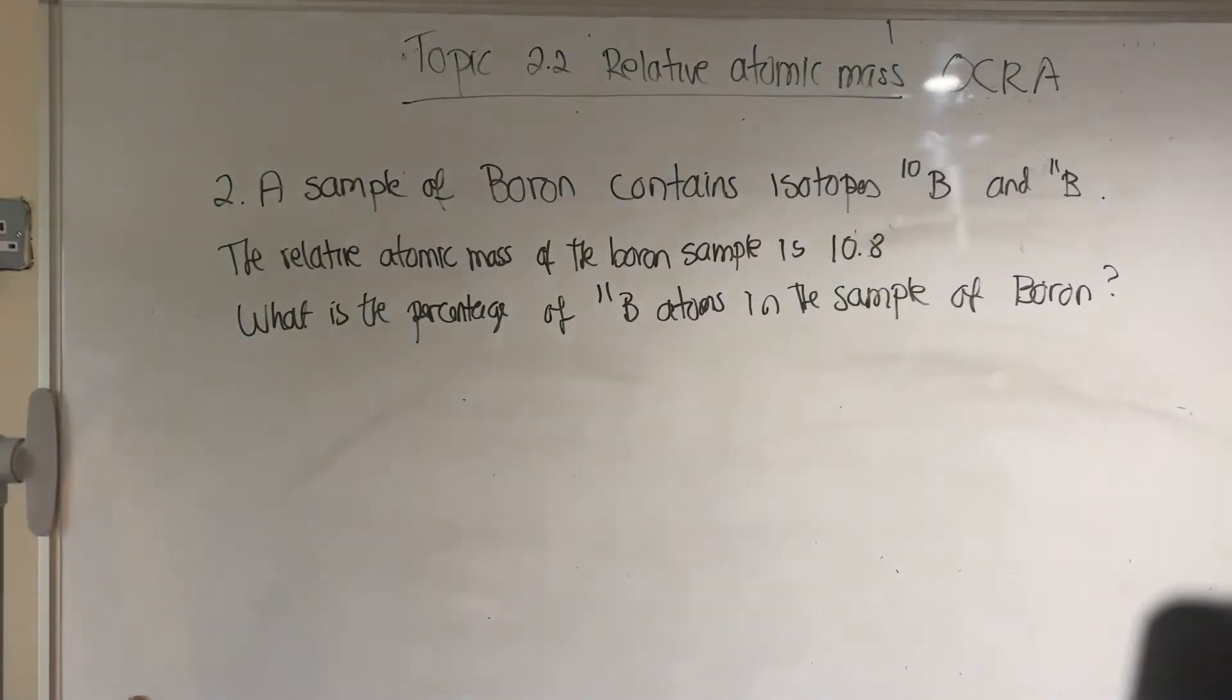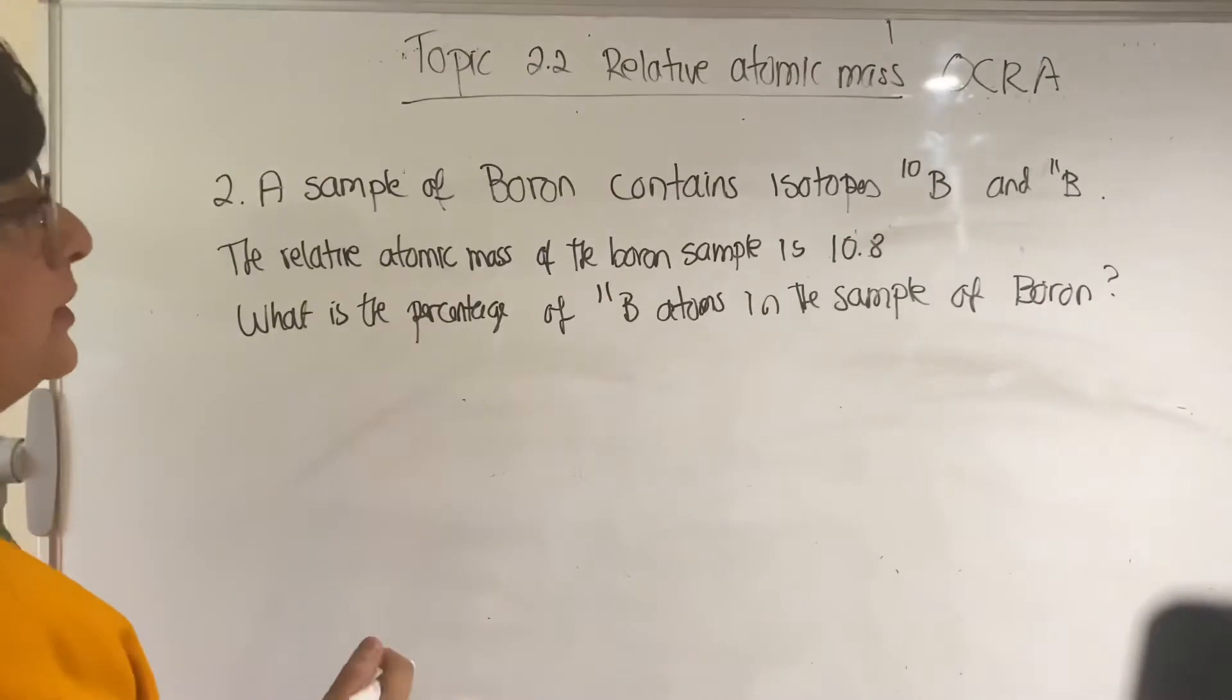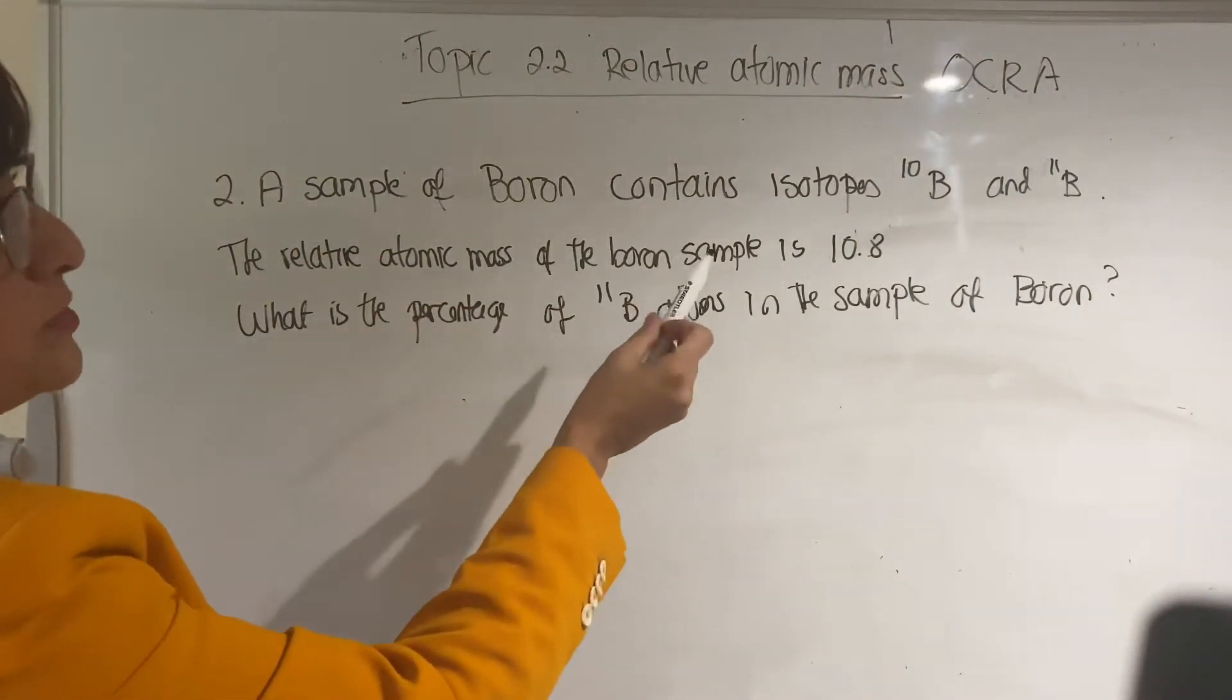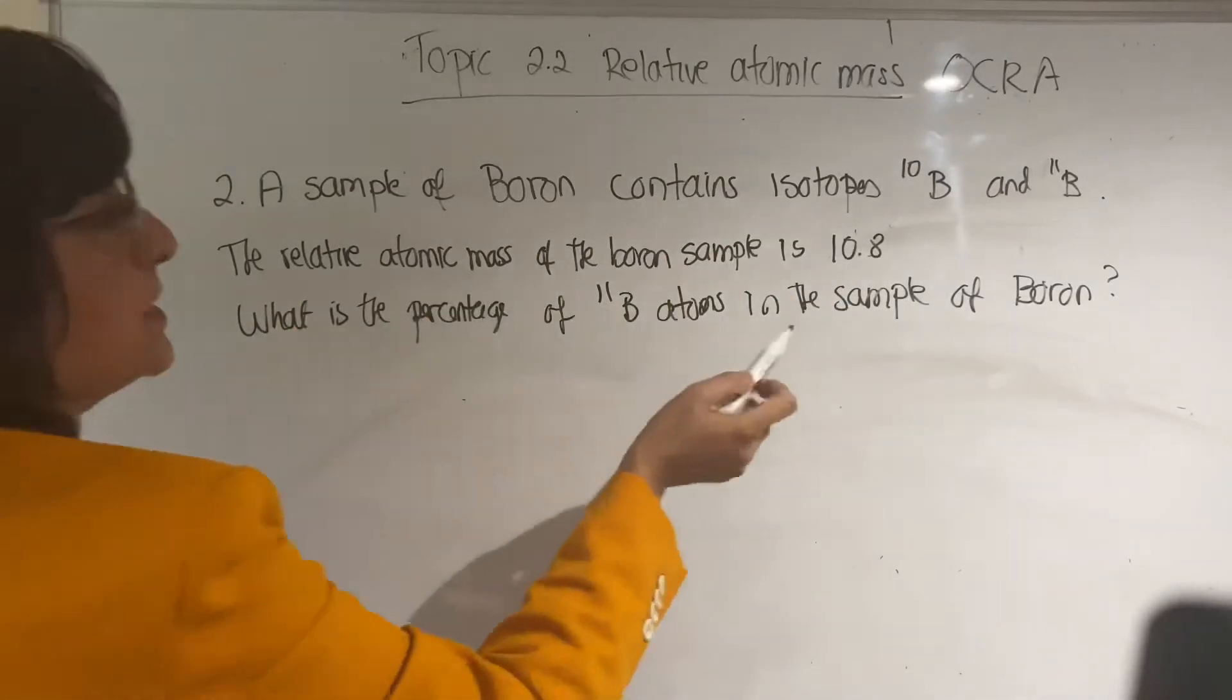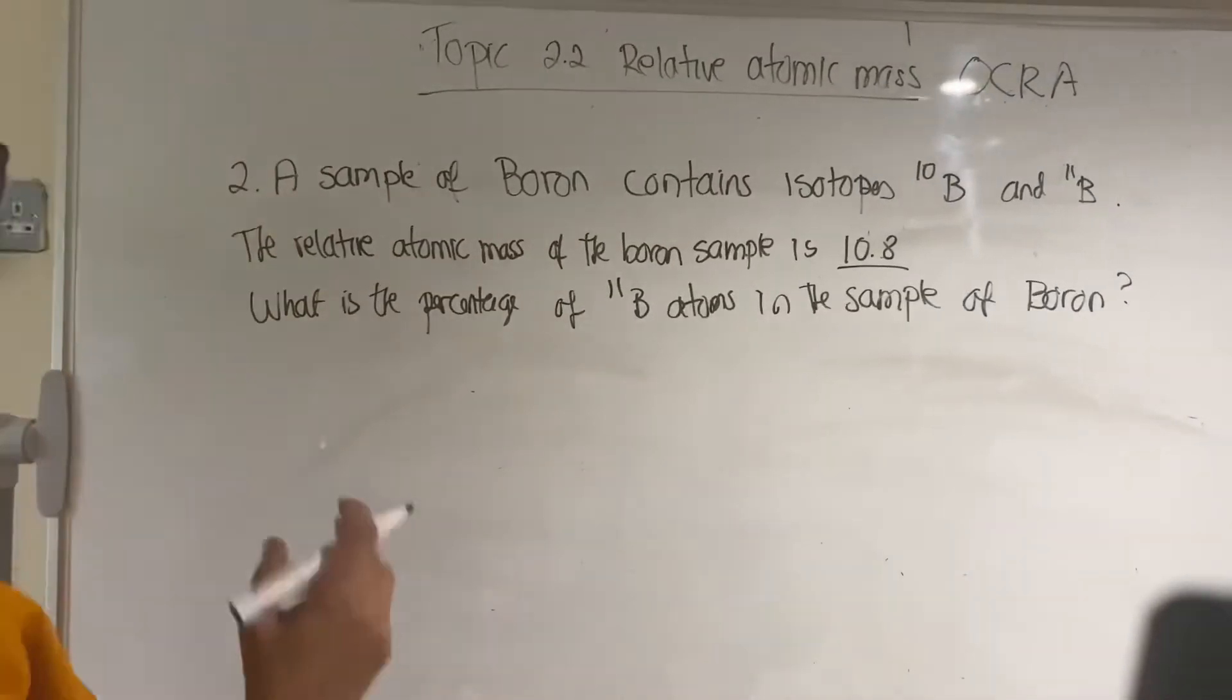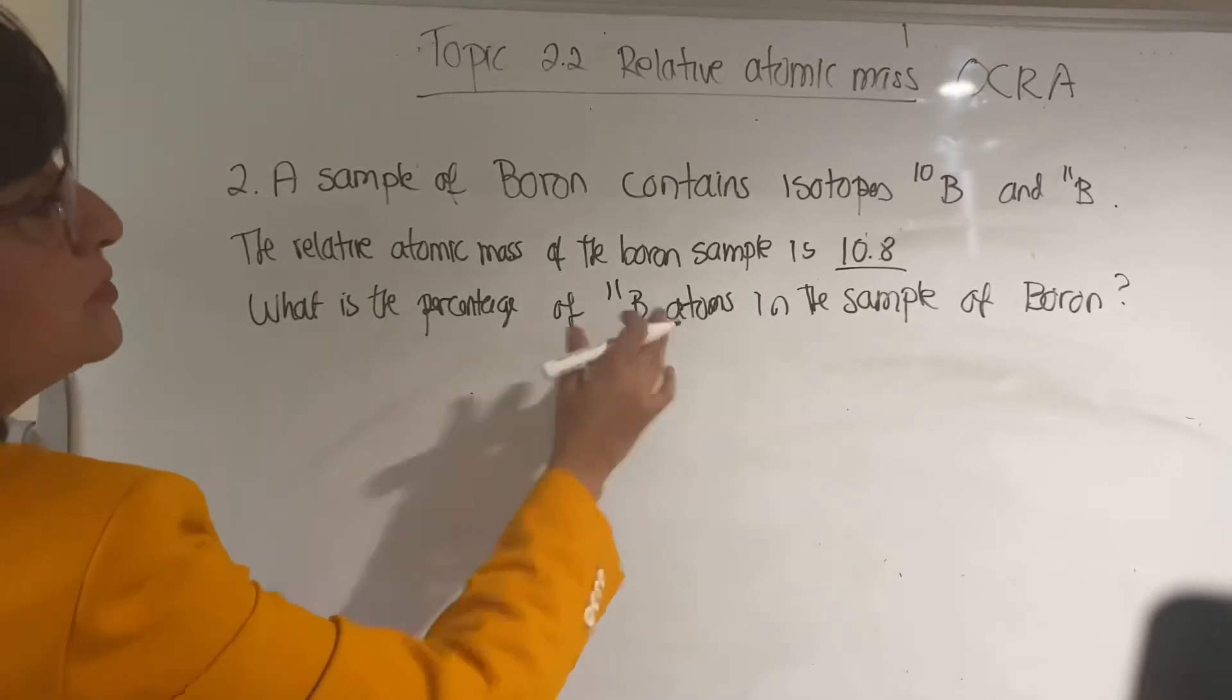I'm going to now show you how to solve a more difficult question. A sample of boron contains isotopes boron-10 and isotope boron-11. The relative atomic mass of the boron sample is 10.8. So they give you the relative atomic mass. What is the percentage of boron-11 atoms in the sample of boron?